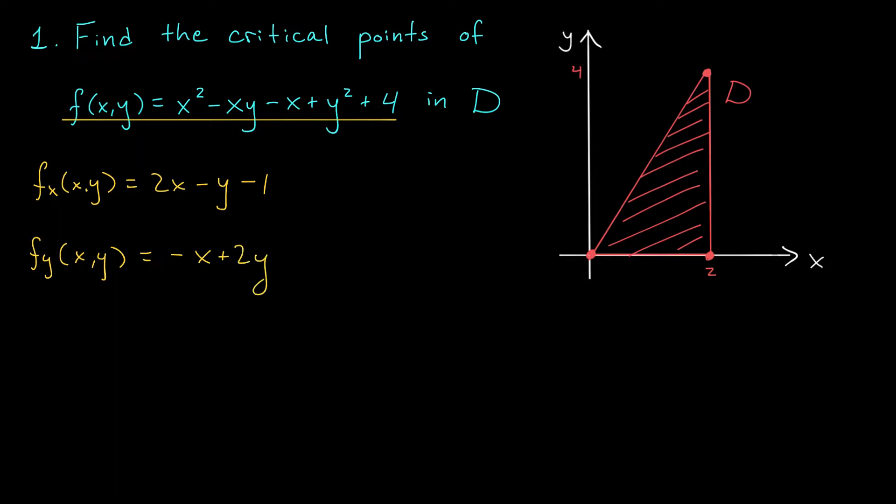We need to figure out where these derivatives don't exist or where they're equal to 0. Well, come on, folks. These expressions are about as nice as they come. They're polynomials in x and y. They exist everywhere. So instead, we'll set both expressions equal to 0 and solve for x and y.